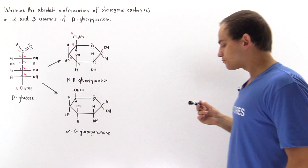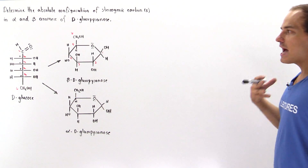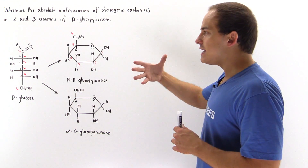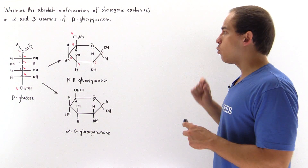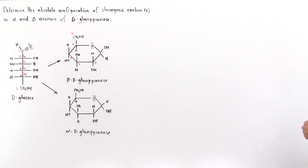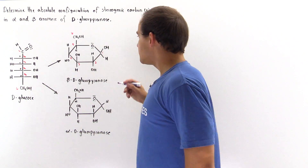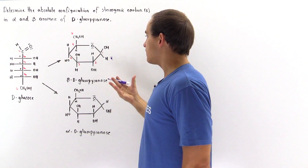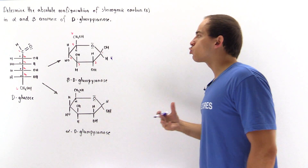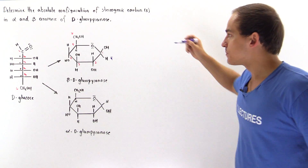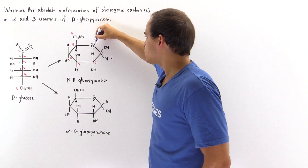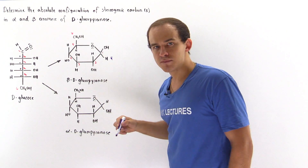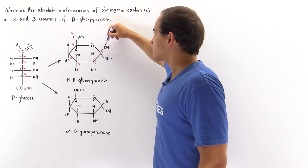Whatever it is for the beta anomer, it should be the opposite for the alpha anomer. Let's begin with the beta case. To determine the absolute configuration, we have to identify the four different groups and label them from least to greatest priority, where four is the least and one is the greatest. The least priority, number four, is obviously the H atom. For the greatest priority: going one way we have an oxygen, another way we have a carbon, and another way we have an oxygen. Since oxygen is heavier than carbon, the oxygen wins.